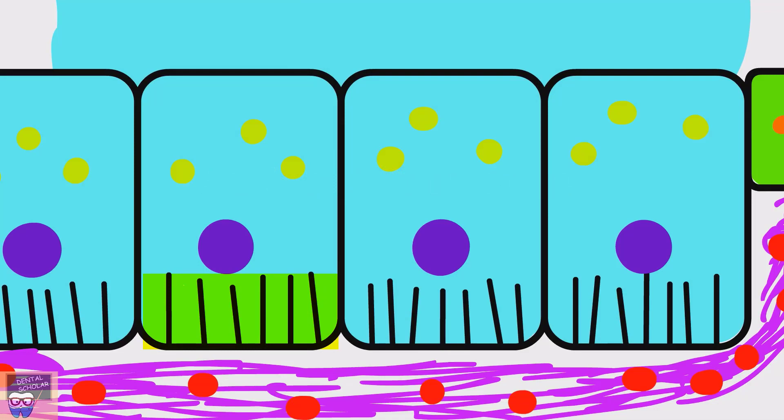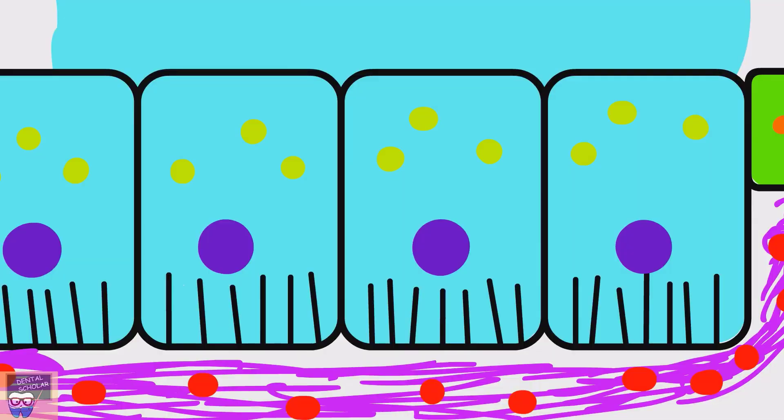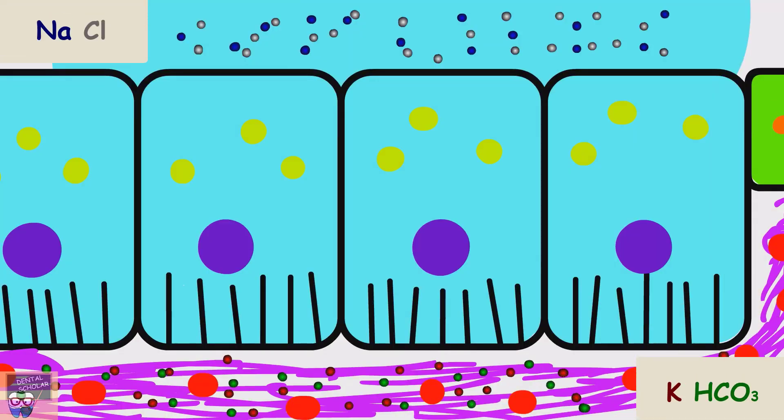Here, you should remember that the striated ducts and excretory ducts are impermeable to water. So the modification is by altering the salt content of saliva. The striated duct cells reabsorb sodium and chloride from saliva, and they secrete potassium and bicarbonate into the saliva.